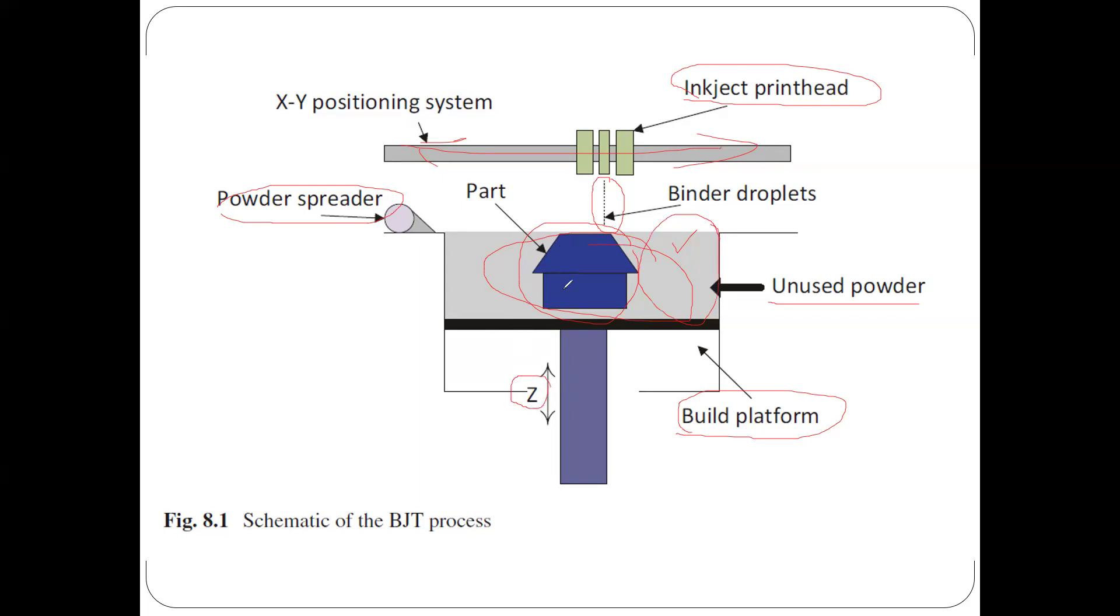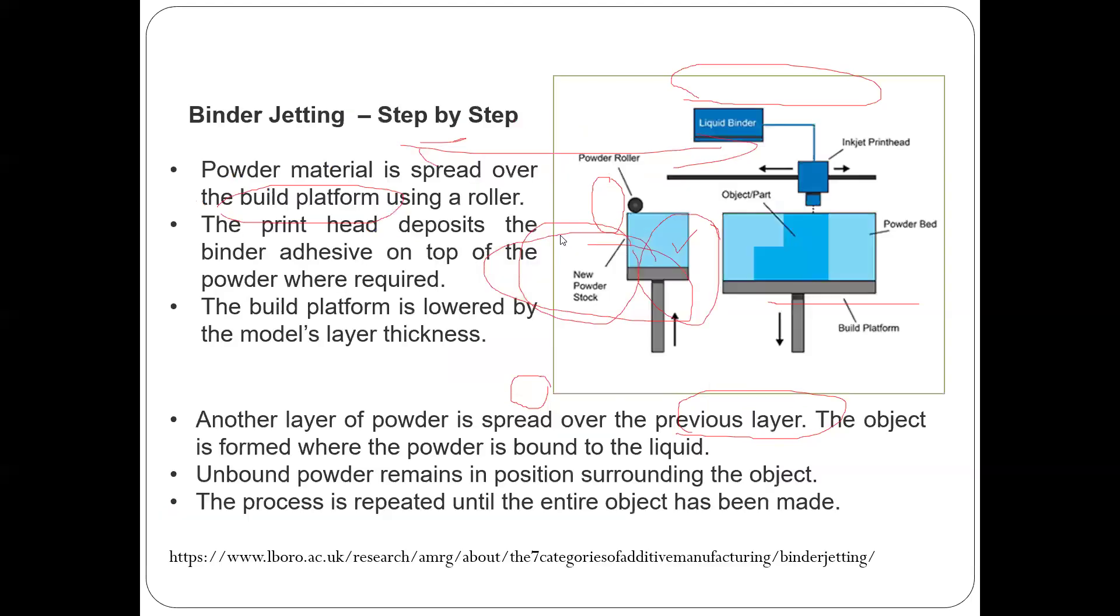The build platform will move one step down, will index one step down. The process is very similar to what you've seen in previous processes, but the only thing is the material is coming in powder form, however it is bound through the print head.